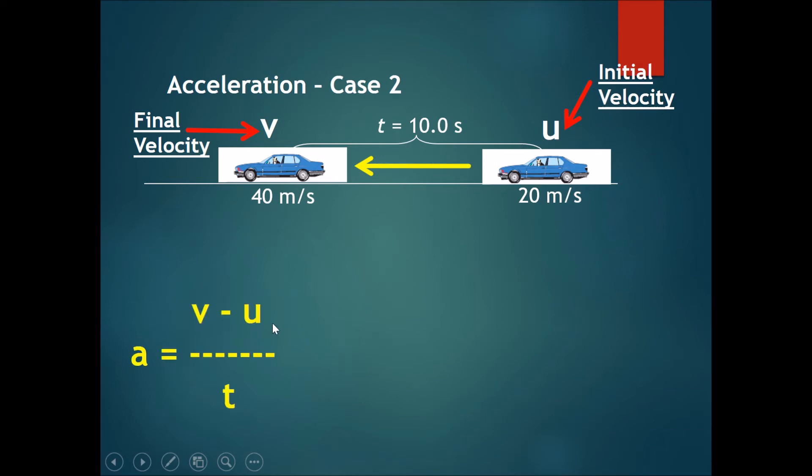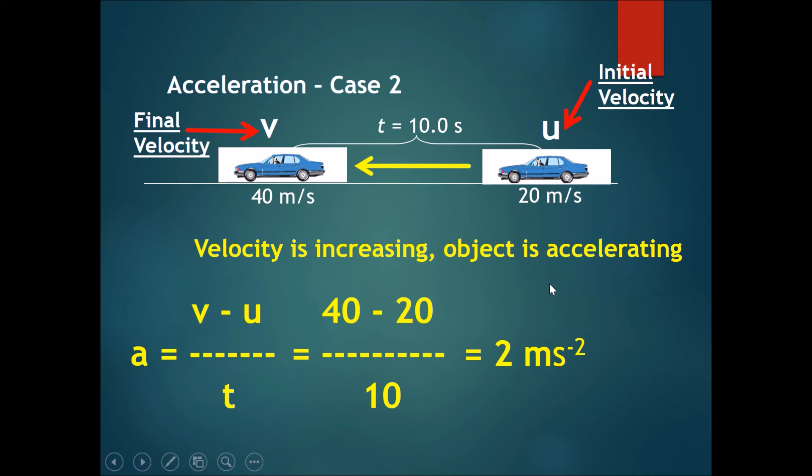Acceleration is V minus u over t. Once again, V, the final speed is 40 and u, the initial speed is 20. So you get 40 minus 20. So you divide it all by the time taken to get from this speed to this speed and that is 10 seconds. So completing the equation, the acceleration of the car was 2 meters per second squared. The velocity is increasing and the object is accelerating.